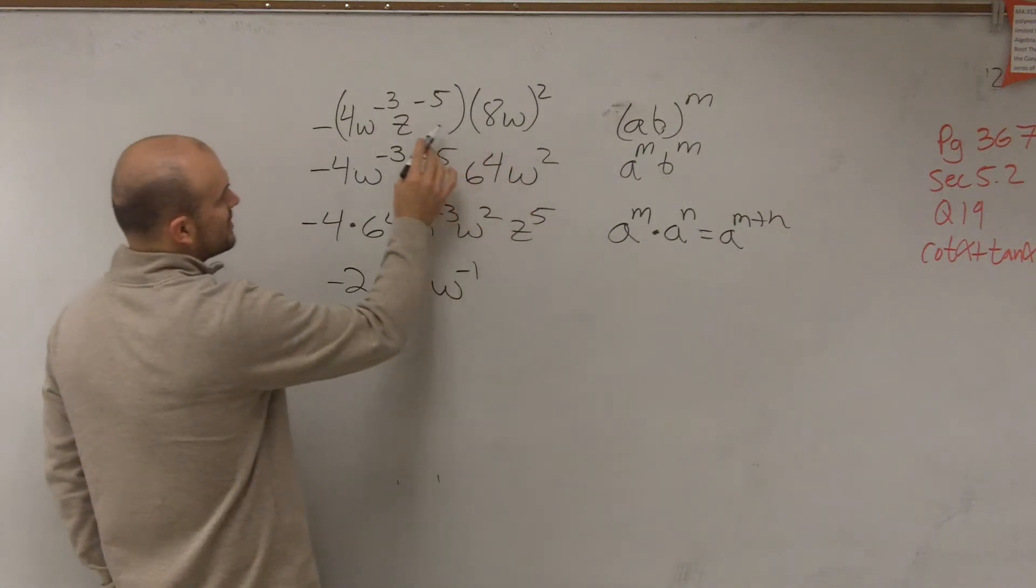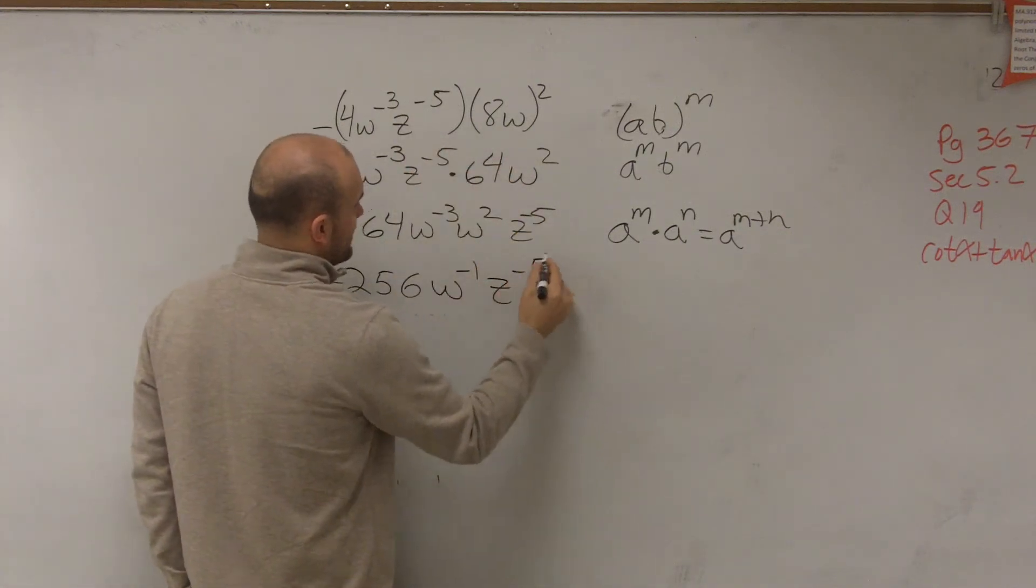Then we have—oh, I'm sorry. This is z to the negative fifth, isn't it? z to the negative fifth.